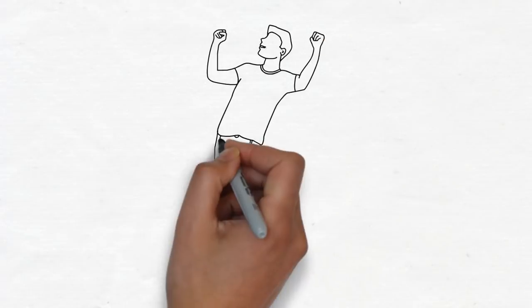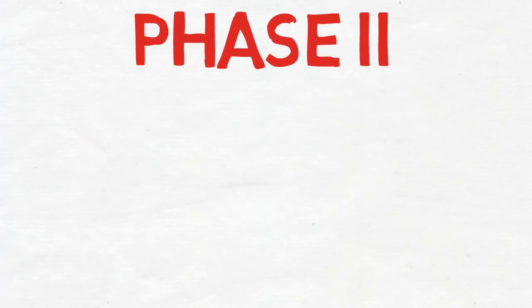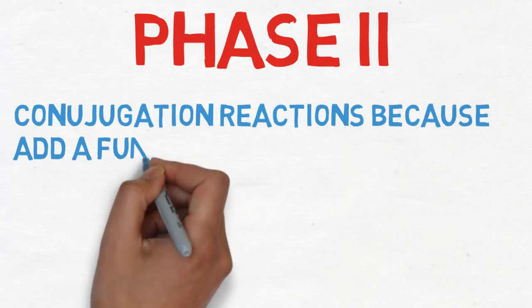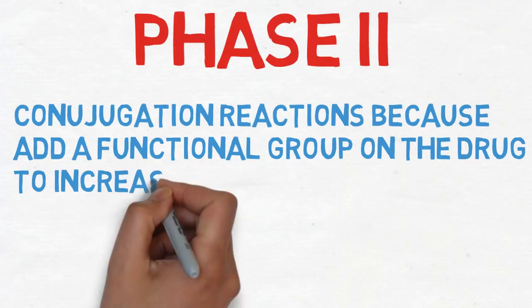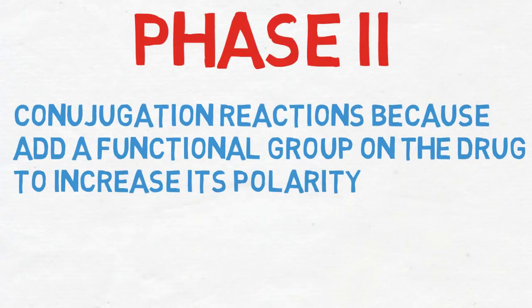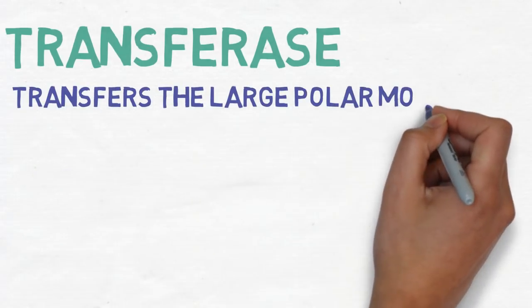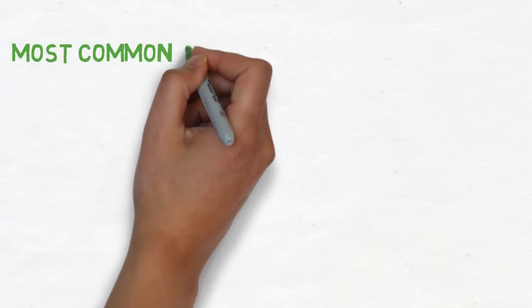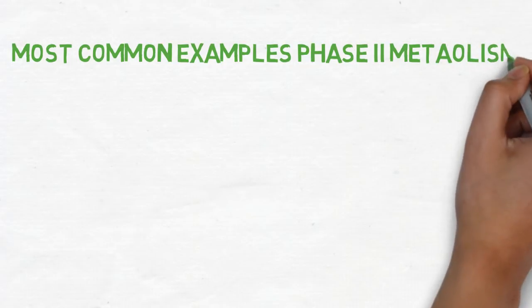Now that we have an idea about phase 1 metabolism reactions, we can start explaining the phase 2 reactions. Phase 2 reactions are commonly called conjugation reactions, owing to the fact that they add a functional group on the drug for the purpose of increasing its polarity. The conjugation process requires an enzyme, generally termed a transferase, that transfers a large polar molecule called a cofactor onto the drug. There are many examples of phase 2 metabolism reactions, of which we will mention the most common.